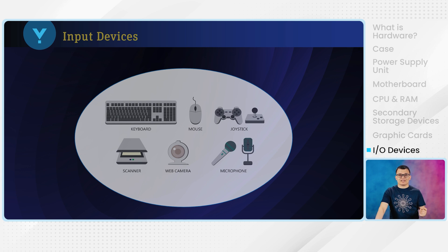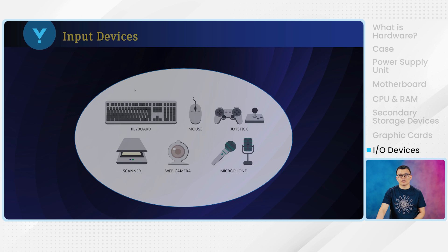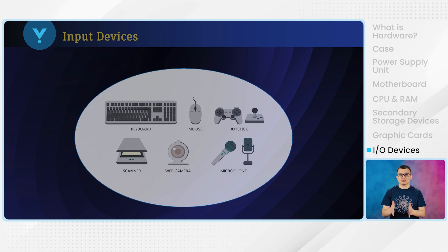We also have input devices as hardware of the computer. Input devices are used for facilitating communication between you and the computer — they enable the user to interact with and control the device's operations. For example, if you want to open a file, you use the mouse and double-click it. If you want to search something on Google, you type it using a keyboard. Without input devices, communication with the computer would be much more difficult.